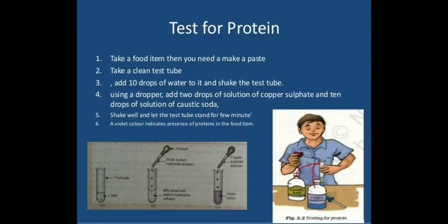Now, around 10 drops of sodium hydroxide, caustic soda and shake it very well so that everything gets mixed up. After that, leave it for some time. What do you observe? If you observe the violet color inside the test tube, it confirms the test for proteins.